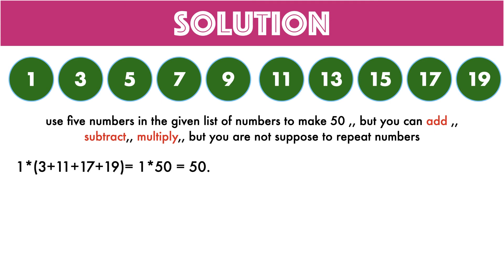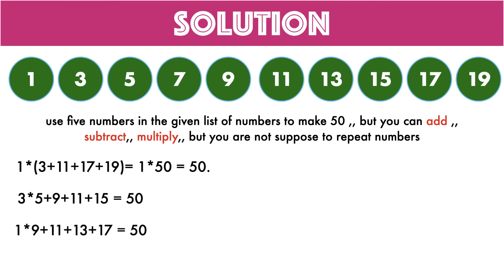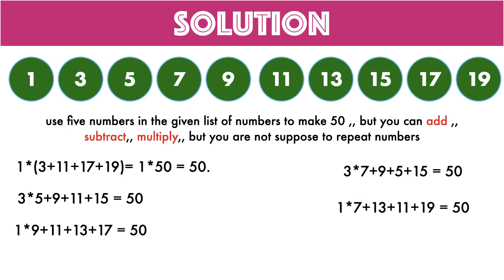One way to achieve this: 1 times 3 plus 11 plus 17 plus 19 equals 50. Other possibilities: 3 times 5 plus 9 plus 11 plus 15 also results in 50. Also, 1 times 9 plus 11 plus 13 plus 17 equals 50; 3 times 7 plus 9 plus 5 plus 15 equals 50; and 1 times 7 plus 13 plus 11 plus 19 also equals 50. So there are multiple answers.